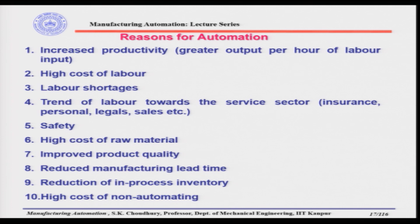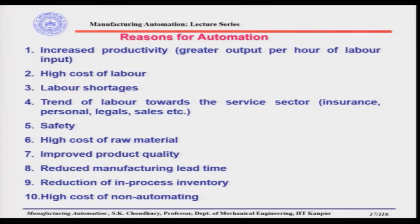Second reason: high cost of labor can justify the high initial investment in automatic machines and equipment. Automatic equipment is quite expensive compared to mass production equipment, so high labor cost justifies this. Third reason: increasing labor shortage forces us toward manufacturing automation. Fourth reason: the trend of labor toward service sectors — insurance, personnel, legal, sales, etc. — means fewer people are available for production and assembly.